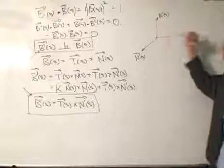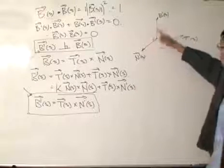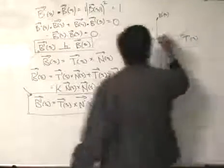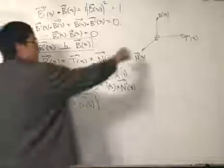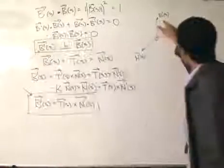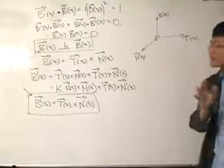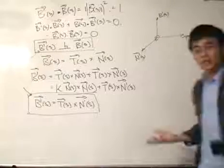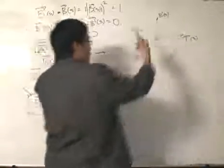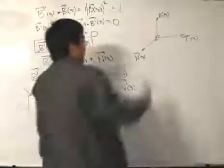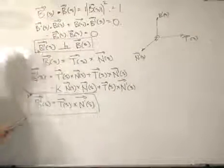The unit tangent vector stays in one direction, and this remains true as long as I swivel the other two around while keeping them mutually perpendicular at 90 degrees. So the first derivative of B and the first derivative of N can swivel around the unit tangent vector — but we still don't know what these two vectors actually mean.